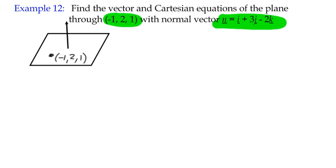We'll call that n, and we know that n has a component 1, 3, and negative 2. And we know that, we'll call that point a, and we can say that a has the components negative 1, 2, 1. So if we want to find the equation of the plane in vector form, then we're going to start with the idea of n dot r equals n dot a.